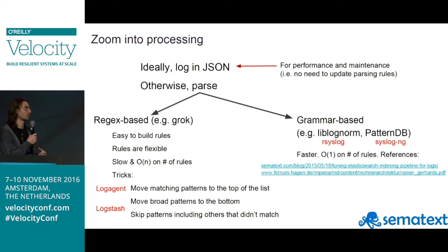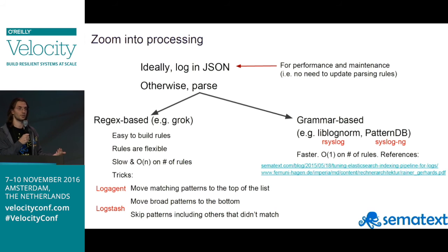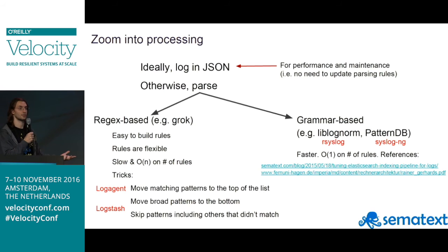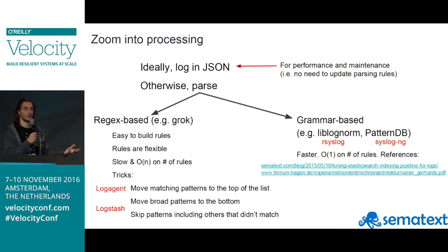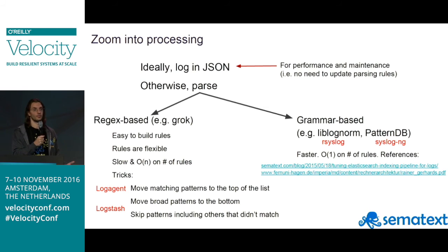When processing, you need to do parsing. Ideally log in JSON — that's the fastest and most convenient. If you need to parse unstructured data, you have two main options: regex-based parsing like Logstash's Grok, or grammar-based parsing. Regex is more flexible but typically slower, especially as you add more rules, even though different shippers try to improve scalability with a large number of rules.